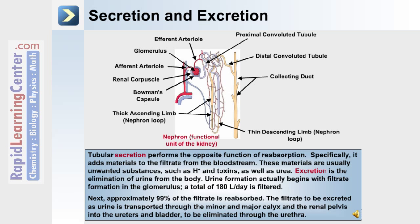The nephrons also perform the functional processes of secretion and excretion. Tubular secretion performs the opposite function of reabsorption — specifically, it adds material to the filtrate from the bloodstream. These materials are usually unwanted substances, such as hydrogen ions, toxins, and urea.